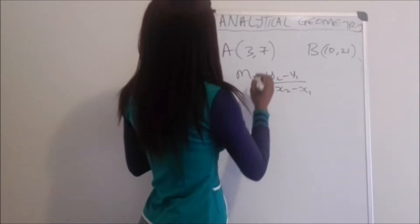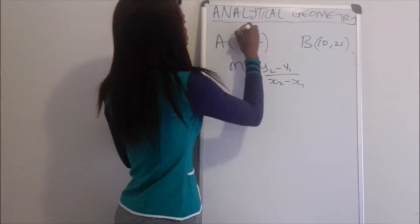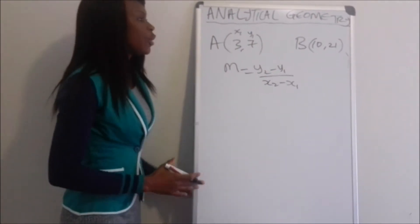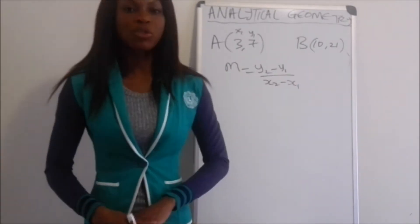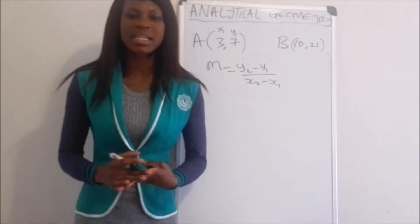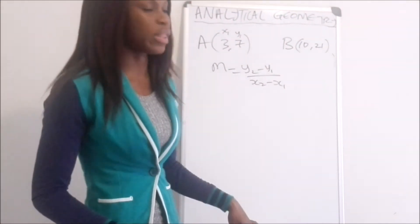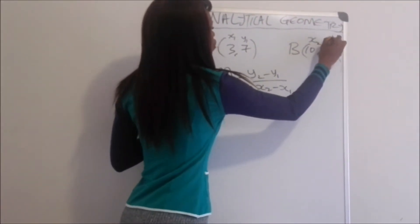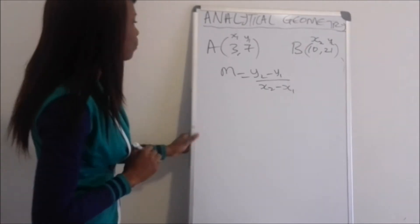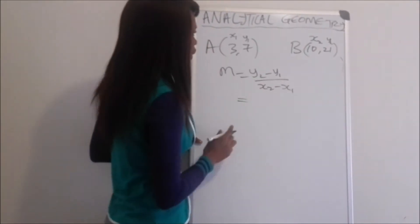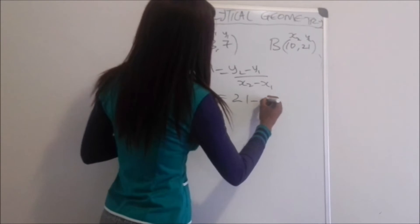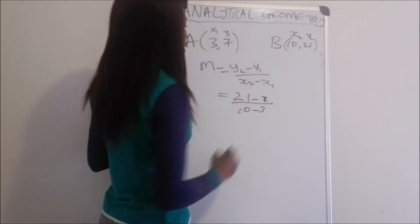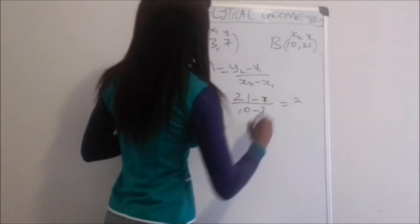Point A which is (3, 7) equals (x₁, y₁) — I'm choosing this as my first point. You can still use B as your first point as long as you keep consistency throughout the question. Point B will be (x₂, y₂). Substituting into the equation: (21 − 7) / (10 − 3) = 14 / 7 = 2. So our gradient m = 2.